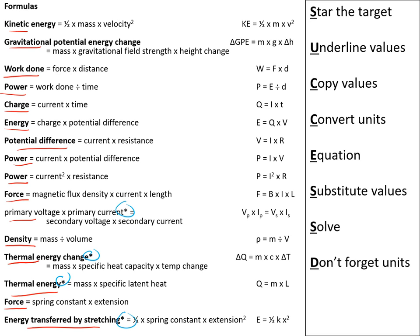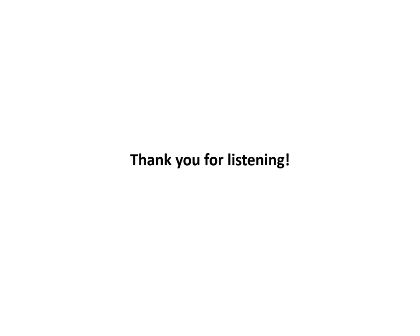You should get in the habit of using SUCCESS D to work through calculation problems: S — star the target; U — underline the values; C — copy out the values; C — convert the units; E — write out the equation and rearrange if needed; S — substitute the values; S — solve; D — don't forget the units. Thank you for listening — the end.